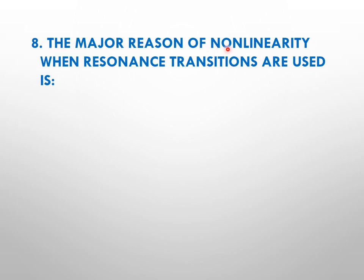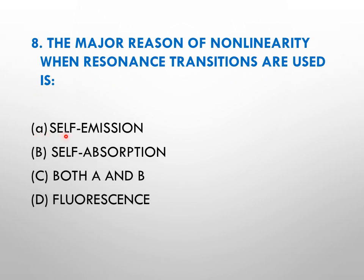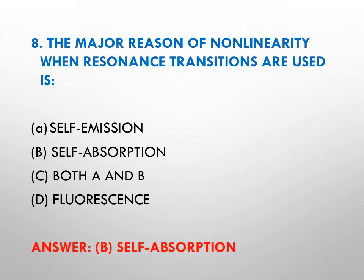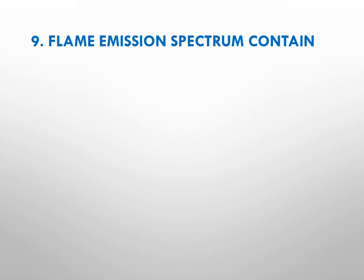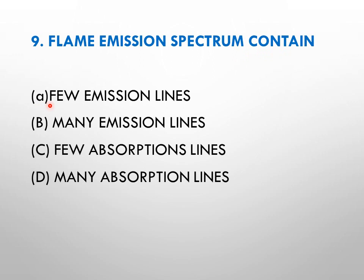Question number eight: the major reason of non-linearity when resonance transitions are used is — options: A is self-emission, B is self-absorption, C is both A and B, while D is fluorescence. The right answer is B, that is self-absorption. Self-absorption causes non-linearity in the results.